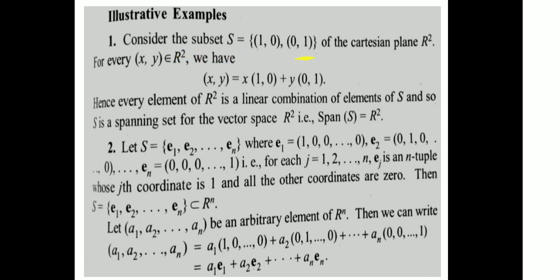Consider the subset S = {(1,0), (0,1)} of the Cartesian plane R². For every (x, y) in R², we have (x, y) = x·(1,0) + y·(0,1). So every element of R² is a linear combination of elements of S. Therefore S is a spanning set of the vector space R², that is, span(S) = R².